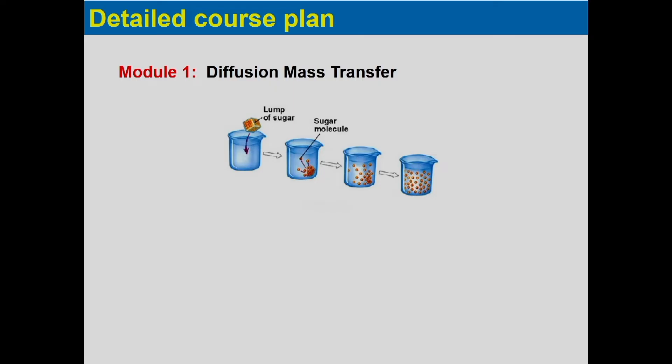In module 1 we have diffusion mass transfer. Consider a lump of sugar which is put into a teacup and then after certain time it will distribute uniformly throughout the solution — this is where we will discuss the diffusion mass transfer.